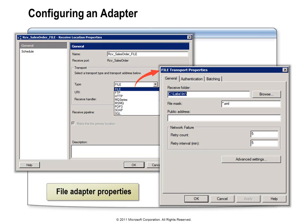We've been leaving the public address blank — that's really just for documentation purposes, where you could put the path an external partner or system would need to use to access this location. On the batching tab, the default batch size is 20, which you'll probably want to leave alone. If you're dealing with large files and the adapter is processing 20 at a time, that might consume a lot of resources, so you might consider reducing the batch size. When you configure an adapter implementing a different protocol, you'll be presented with a completely different collection of properties — each adapter presents its own user interface.